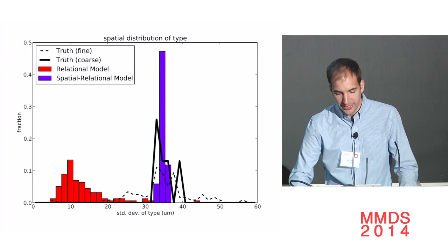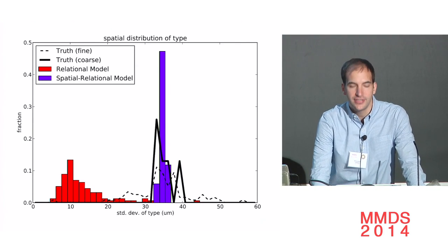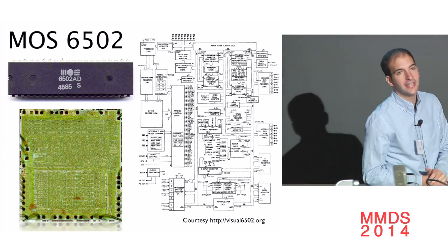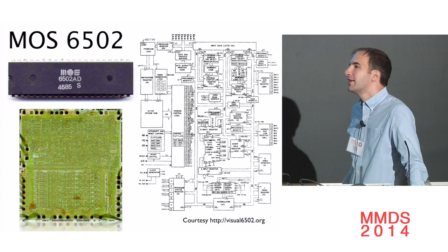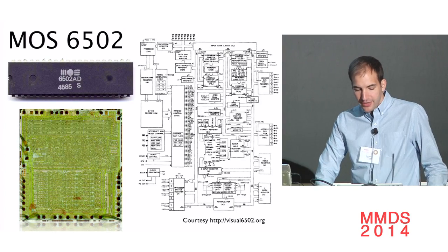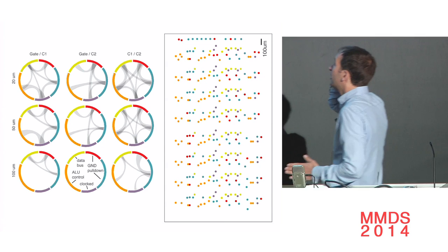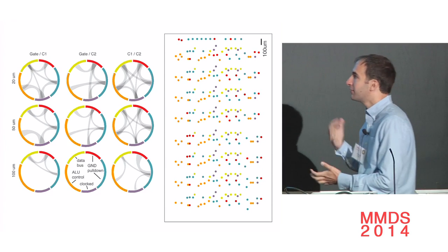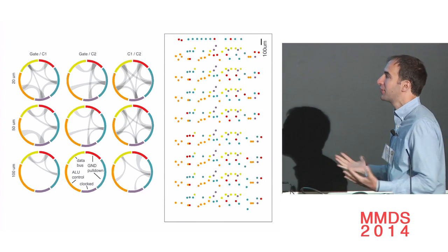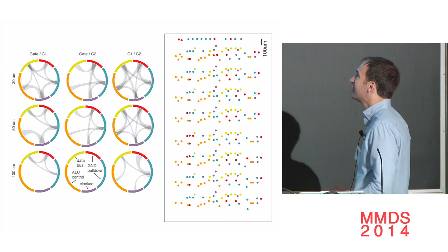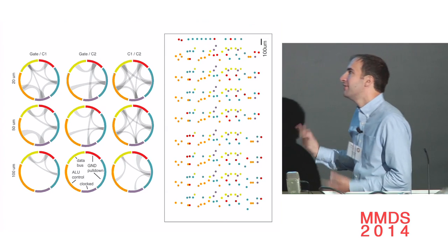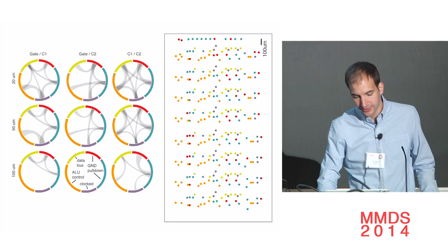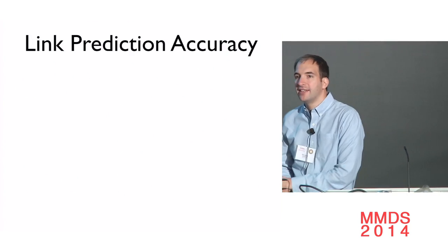Just for fun, we looked at another system with this sort of computational structure: the original MOS 6502 processor. There's a great project doing connectome-style reconstruction on this chip. Taking a chunk of the chip — the register file area — encoding each transistor as a relation in our model and running our algorithm, we identify that different types of transistors exist, which is not terribly surprising but reassuring. The spatial pattern of types looks very man-made; we pulled out transistors for ALU control, clocked transistors, data bus transistors, grounded transistors, and transistors explicitly acting as pull-downs.